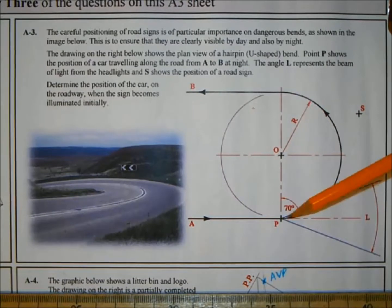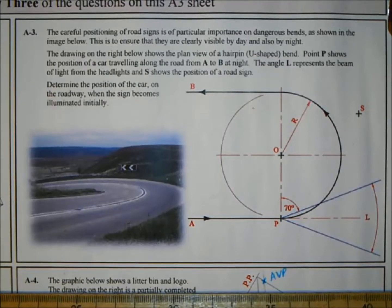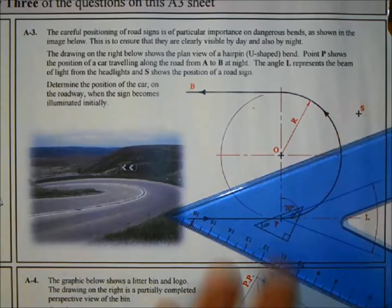What I want you to do is show where point P would be on the road when you first see that sign. First thing I'm going to do is join the sign to the center of that hairpin bend.